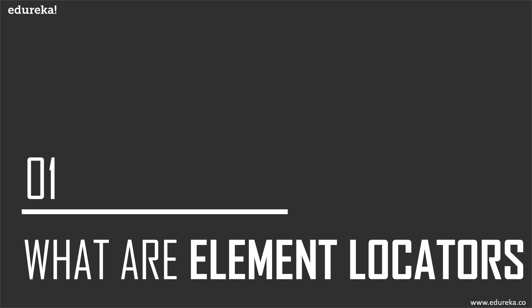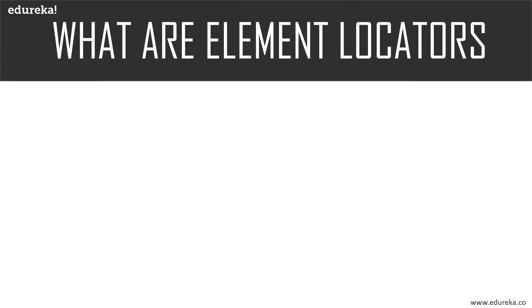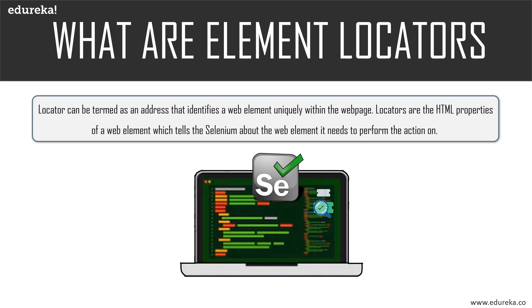Let's begin by learning about element locators. Since Selenium is an open-source portable framework, we can easily inspect elements on a web page and link them using proper code. Element locators in Selenium make it easy to find an element on the web page — it can be termed as an address that uniquely identifies a web element. These element locators are basically the HTML properties of a web element which tell Selenium about the action it needs to perform.